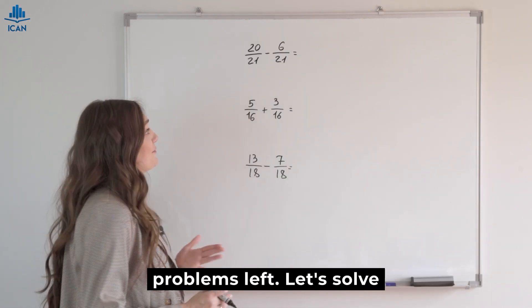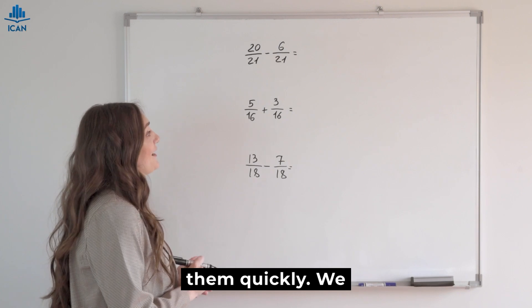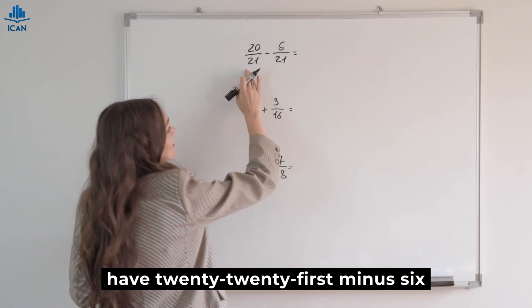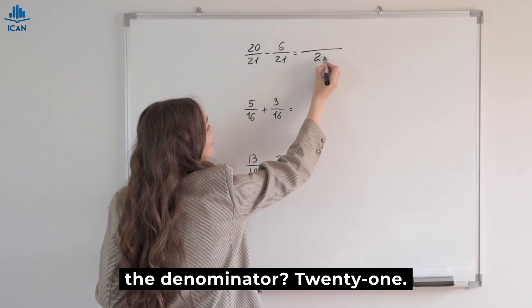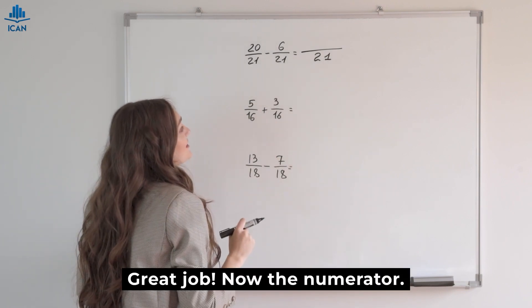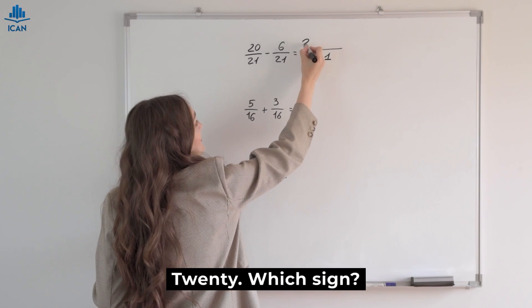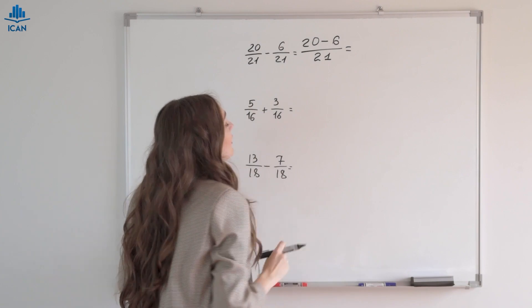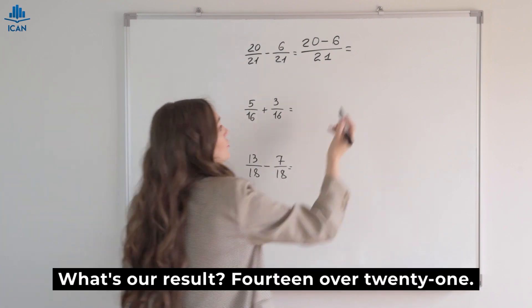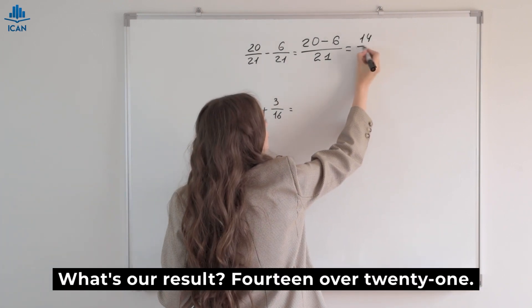Only three problems left. Let's solve them quickly. We have twenty twenty-first minus six twenty-first. What's the denominator? Twenty-one. Great job. Now the numerator. Twenty. Which sign? Minus. Minus six. Twenty minus six. What's our result? Fourteen over twenty-one.